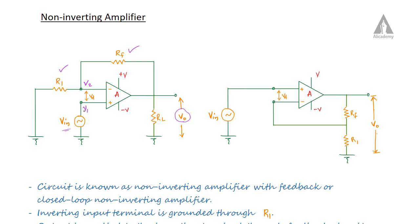Now V1 is the potential at the non-inverting node — that is the positive terminal potential. The inverting terminal potential is V2. The difference is V1 minus V2.